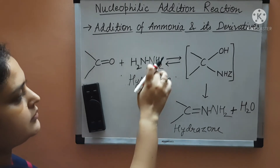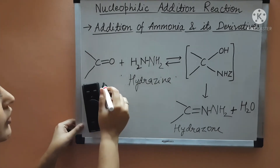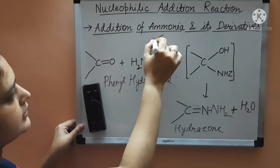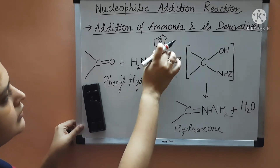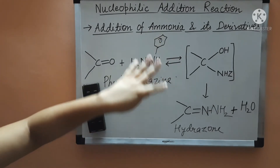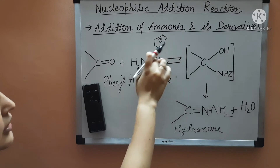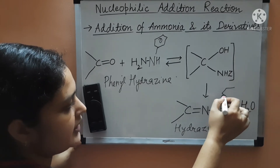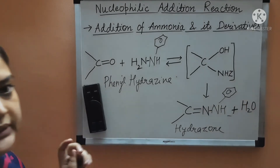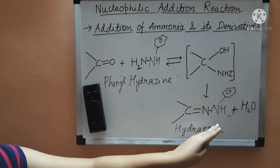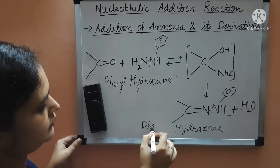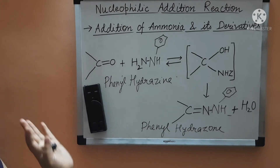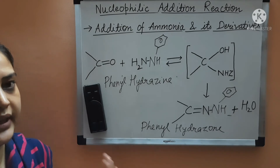If we replace one hydrogen of hydrazine by a phenyl group, then it will be known as phenyl hydrazine. Here the phenyl group is attached to NH, so this is your Z group — C6H5NH is your Z group. The product formed from phenyl hydrazine is known as a phenyl hydrazone. Similarly, if there are NO2 groups — nitro groups — at the 2nd and 4th positions, then this becomes 2,4-dinitrophenyl hydrazine.